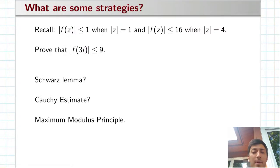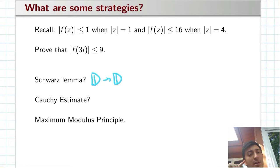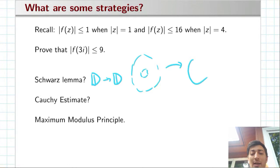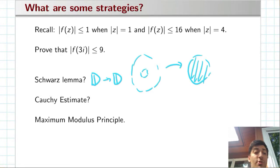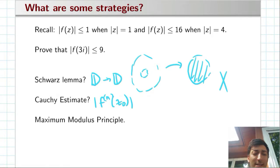When I first looked at this problem, I thought I might do it using the Schwartz Lemma, but the Schwartz Lemma only deals with maps from the disk to itself, and we don't know anything about where this map might send zero. In a previous video I talked about using conformal maps to turn problems into ones where the Schwartz Lemma is applicable, but you don't actually have any conformal maps from the annulus to the disk. So you can't use the Schwartz Lemma. The second thing I thought of was the Cauchy estimate, but that only deals with bounding derivatives of a function at some point, so it's not helpful either.